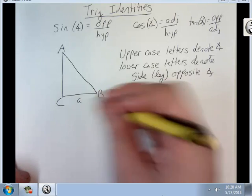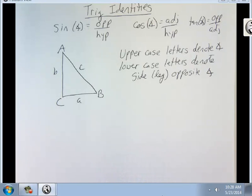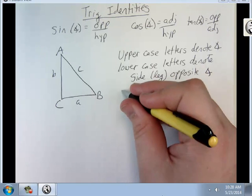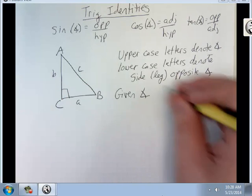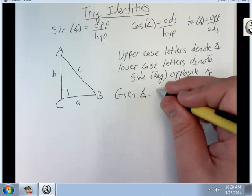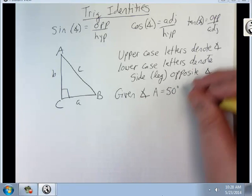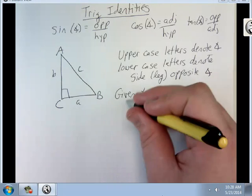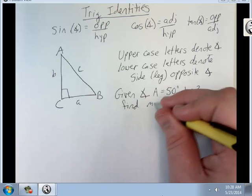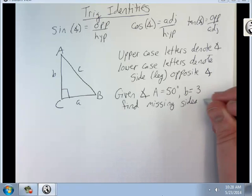So this is A, this is B, and this is C. Given angle A equals 50 degrees, B equals 3, find missing sides and angles.